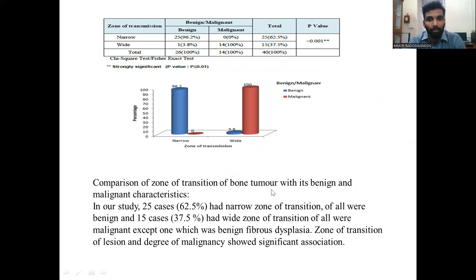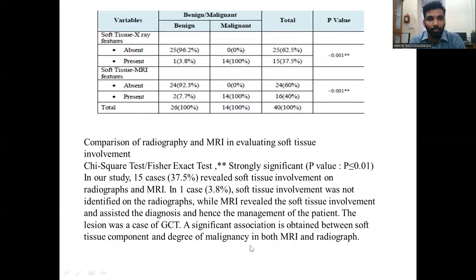Comparing zone of transition with benign and malignant characteristics: 25 cases had a narrow zone of transition and all were benign, while 15 cases had a wide zone of transition and all were malignant except one, which was a benign fibrous dysplasia. Zone of transition and degree of malignancy showed significant association. Comparing radiography and MRI in evaluating soft tissue involvement, Chi-square and Fisher's exact test showed strong significance with p-value less than 0.01. In one case, soft tissue involvement identified on MRI was not identified on radiographs, assisting diagnosis and management; the lesion was a giant cell tumor.